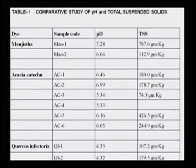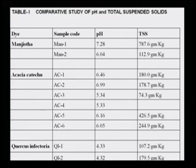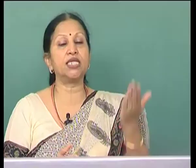In the comparative study of pH and total suspended solids, Munjeet samples from company 1 and company 2 — labeled Man 1 and Man 2 — had different pH values: one had 7.28 and the other had 6.04, which is fairly different. The total suspended solids in one Munjeet sample was found to be 787.6 g/kg, while the other company's sample showed a very low total suspended solid. If the total suspended solid is very high, the color content will get overshadowed.